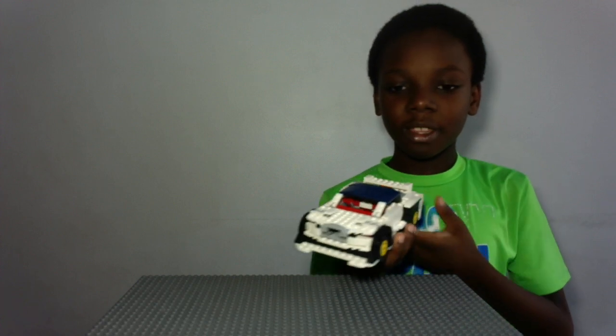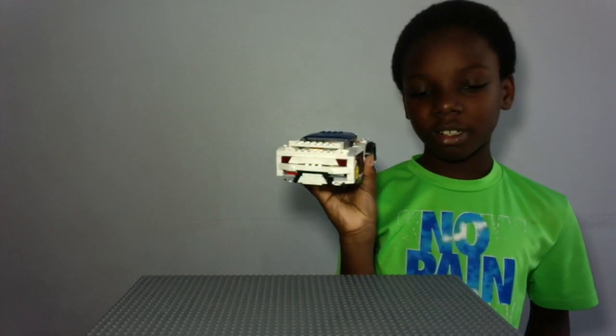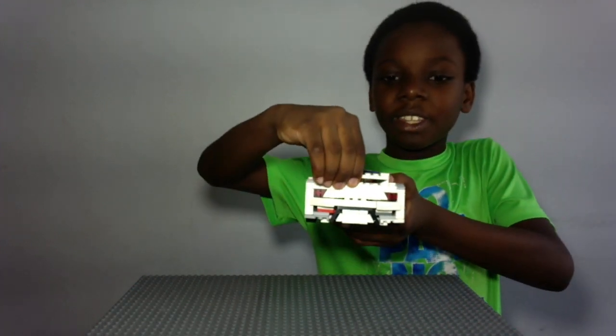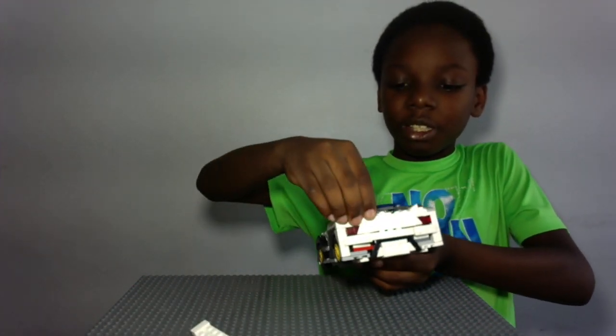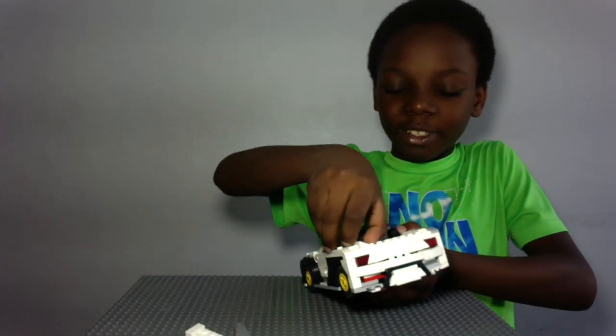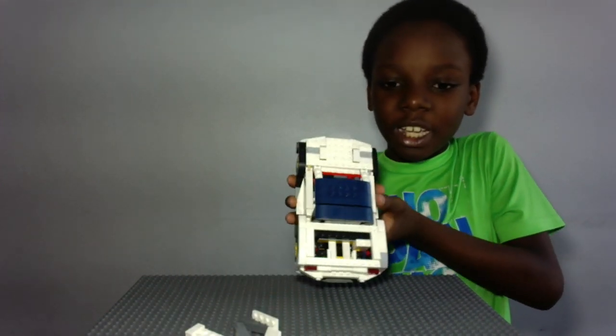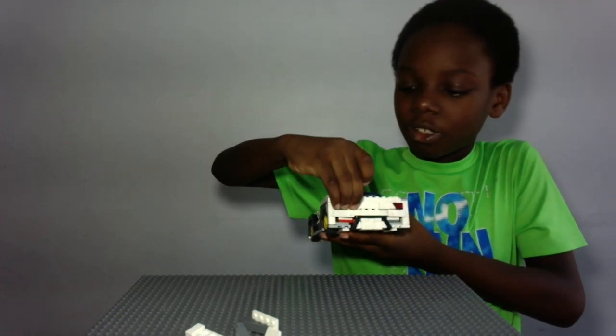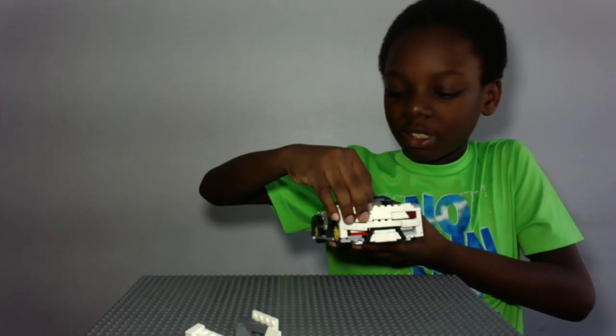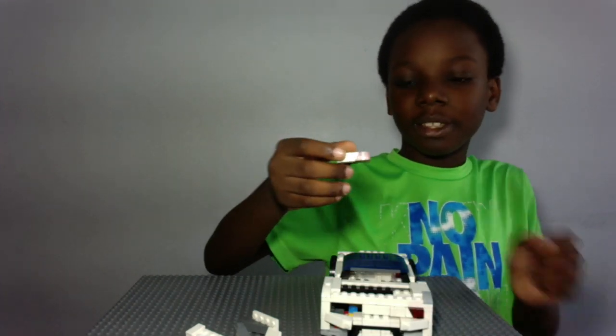And now it's time to talk about the back of this car. Here is the back. Specifically, how I made the lights and generally the parts of this back. So now I am going to take all of this off. And now you can see how I built these parts. I'm going to take this part out. Okay, so here are the lights.